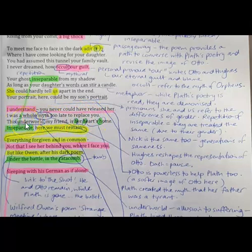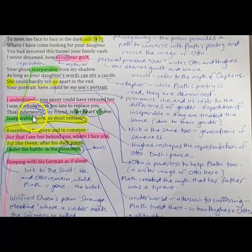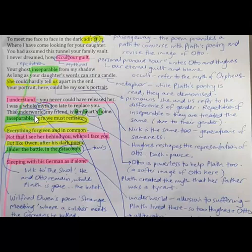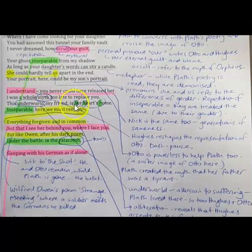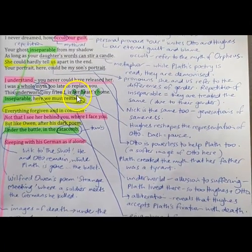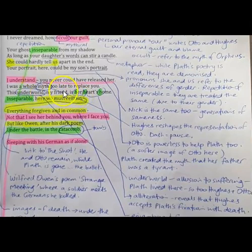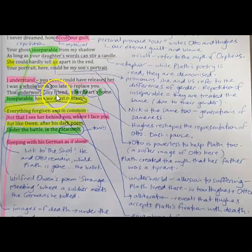This underworld, my friend, is her heart's home. In other poems, we know that the underworld is an allusion to suffering. It's a personal hell. So it has that religious allusion, religious undertone. He's saying that suffering was Sylvia's heart's home. The alliteration there indicates that she was fixated on suffering and her own death. And he's also saying that they too share that. He speaks to him in very endearing terms because they're united in the situation that they're in.